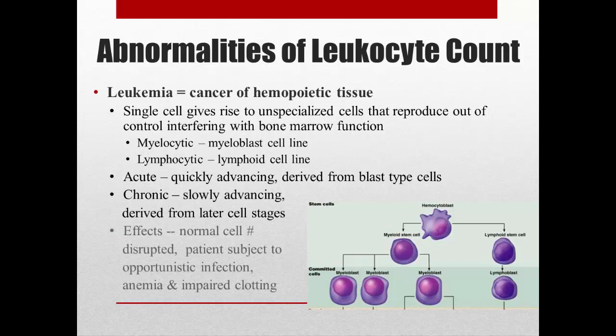The effects of leukemia are that normal cell numbers are disrupted because cancer cells take over the bone marrow, leaving no room for normal bone marrow functioning. The patient, lacking normal white blood cell activity, has a higher incidence of opportunistic infections or anemia, and impaired clotting because platelets aren't being made either.